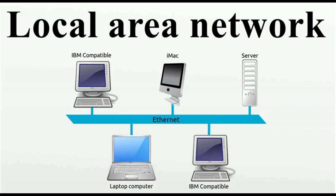Typically, each vendor would have its own type of network card, cabling, protocol, and network operating system. A solution appeared with the advent of Novell Netware, which provided even-handed support for dozens of competing card and cable types, and a much more sophisticated operating system than most of its competitors. Of the competitors to Netware, only Banyan Vines had comparable technical strengths, but Banyan never gained a secure base.